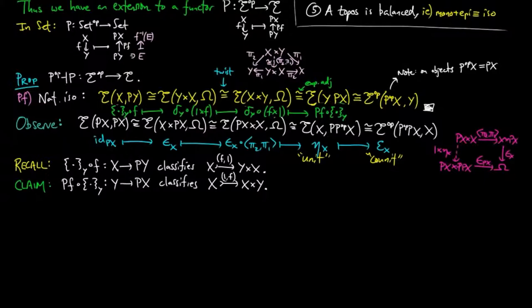This amounts to showing that P(f) composed with the singleton morphism on y is the exponential adjoint to delta sub-y composed with f cross 1, where delta sub-y classifies the diagonal sub-object. It is easy to see that the following diagram commutes.